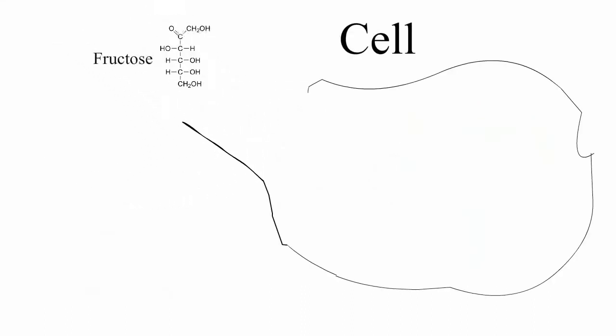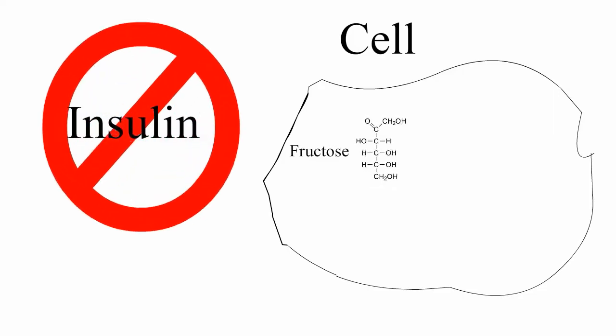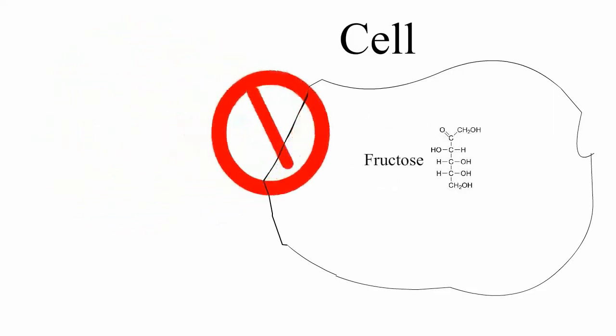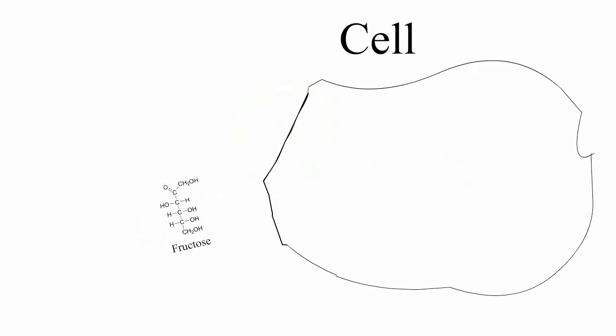Fructose enters cells through the GLUT5 receptor, so it does not require insulin to be broken down into energy. The only problem is that most cells do not have GLUT5 receptors. So on its own, fructose cannot enter cells to be broken down into energy.